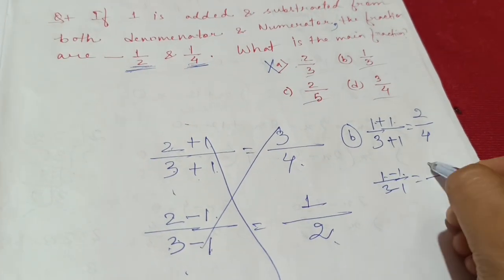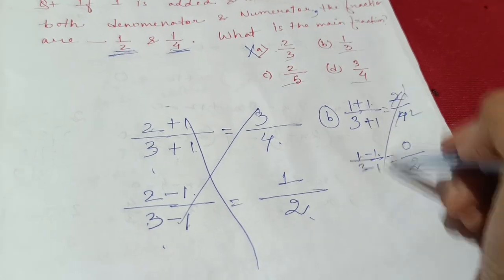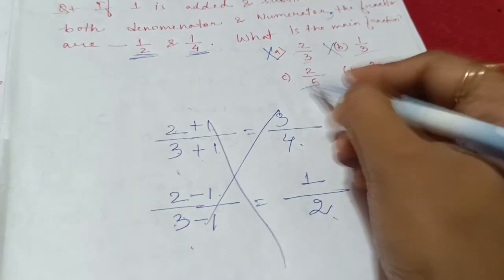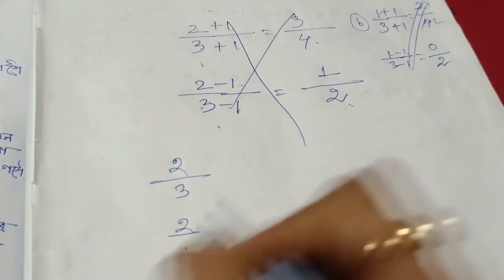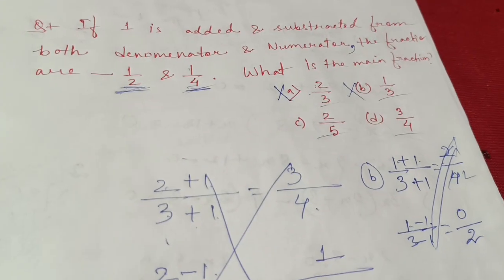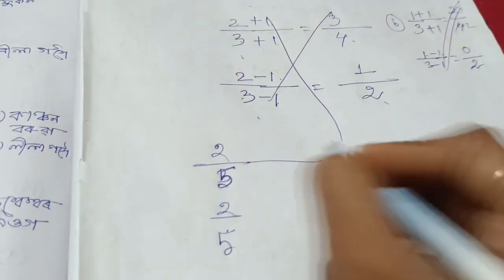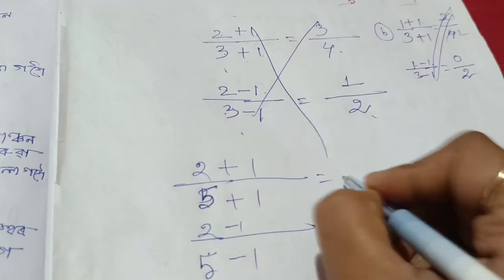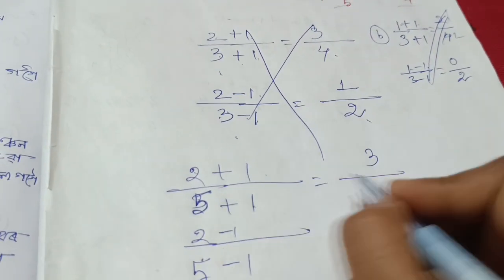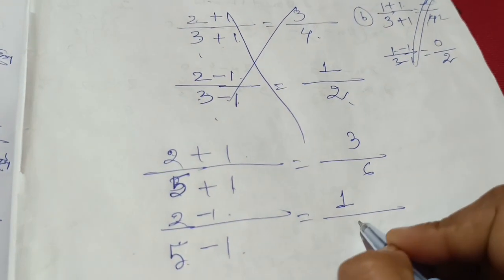So two by three, two, five by option — two by five, option two. 2 by 5 passed, 2 by 5.